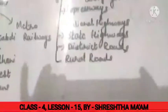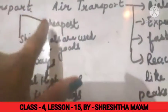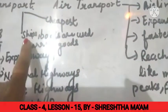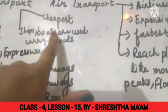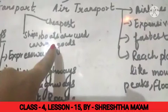Next we have waterways. Waterways is the cheapest means of transport. Ships and boats are used to travel and carry goods through waterways.